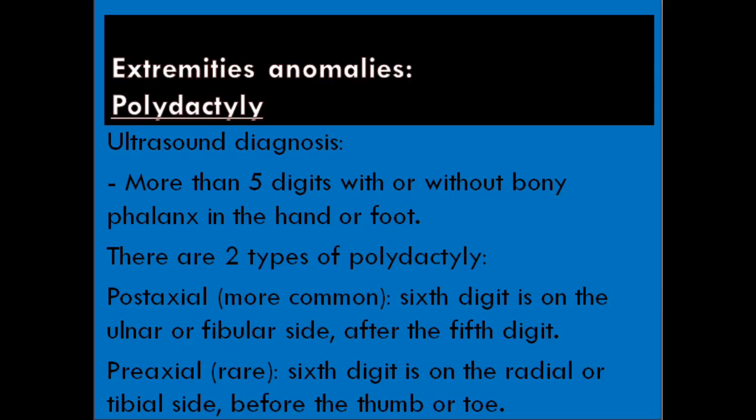The next is polydactyly. Ultrasound diagnosis: more than five digits, with or without bony phalanx, in the hand or foot. There are two types. Postaxial, the more common type, where the sixth digit is on the ulnar or fibular side after the fifth digit. Preaxial, which is rare, where the sixth digit is on the radial or tibial side, before the thumb or toe.